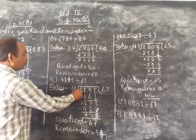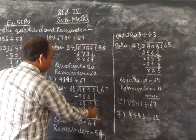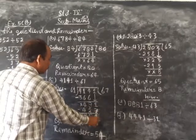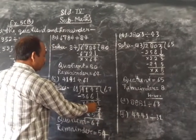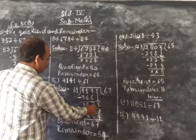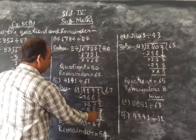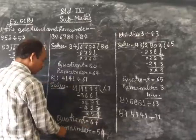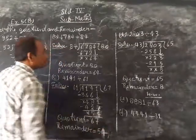61, 7 bar, 427. 7 bar here. 11 minus 7, 4, 6, 6 minus 2, sorry, 7 minus 2, 5, 4 minus 4, 0. So quotient equal to 67 and remainder equal to 54.